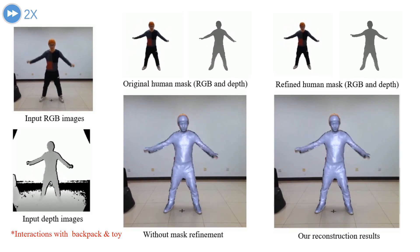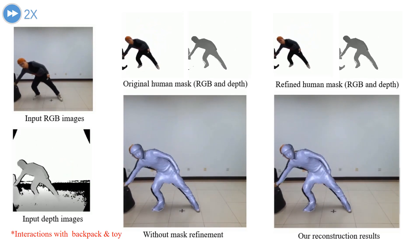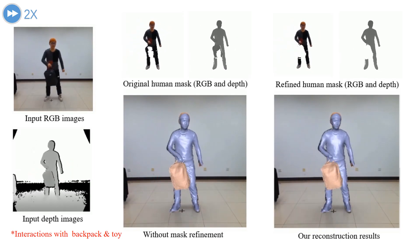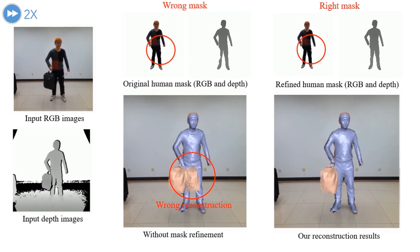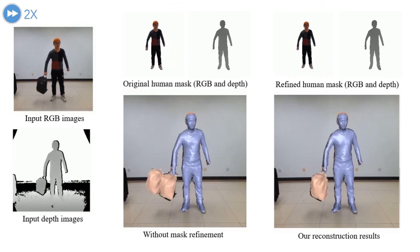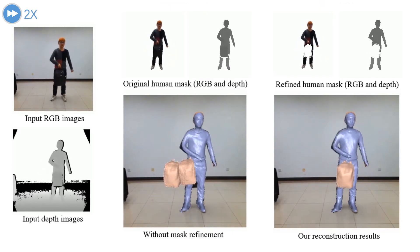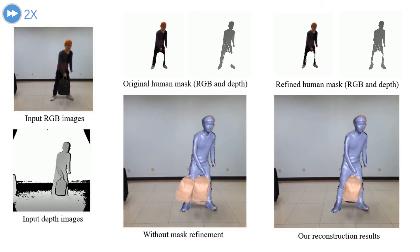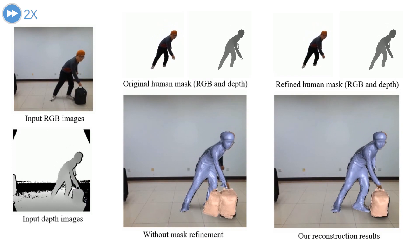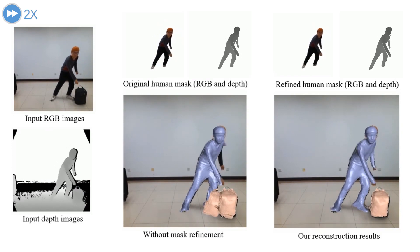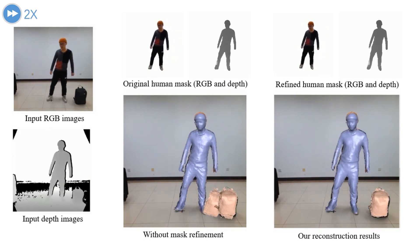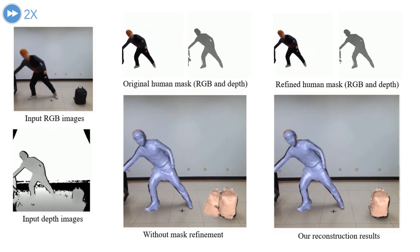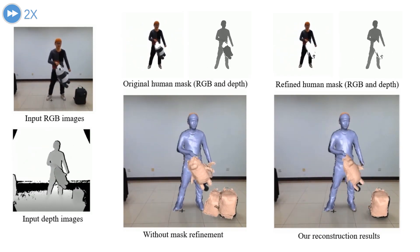For evaluation, our mask refinement can help get accurate human segmentation results and achieve more robust tracking. While directly using the original human segmentation leads to unstable tracking and erroneous reconstructions, especially when human-object interaction occurs.